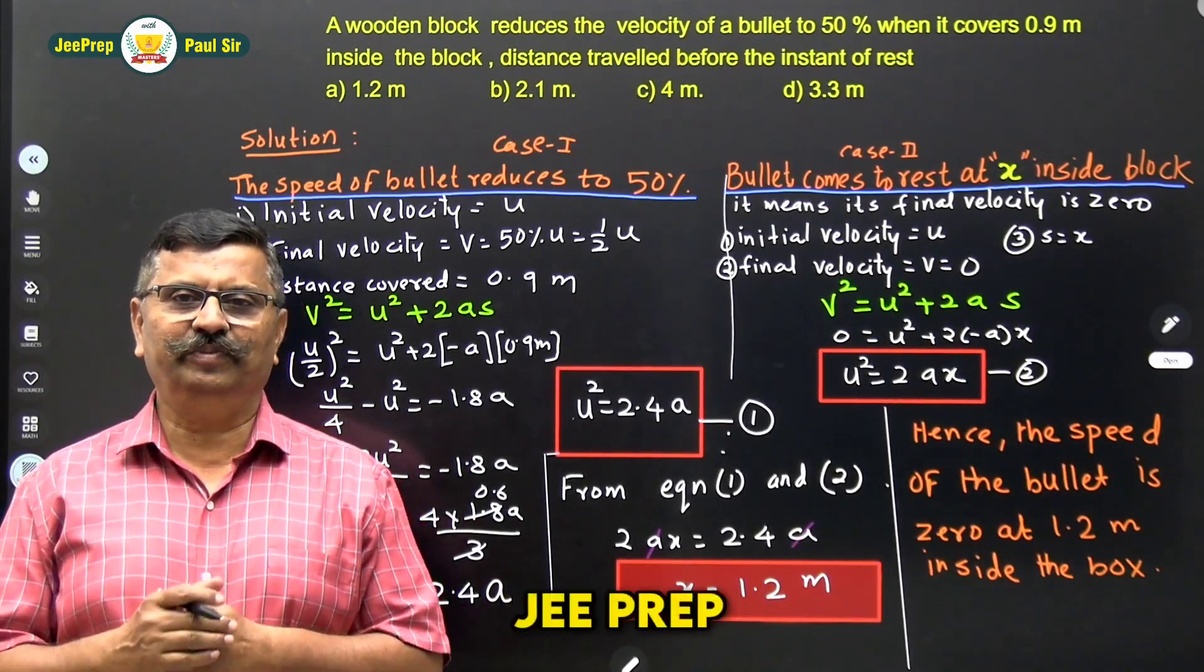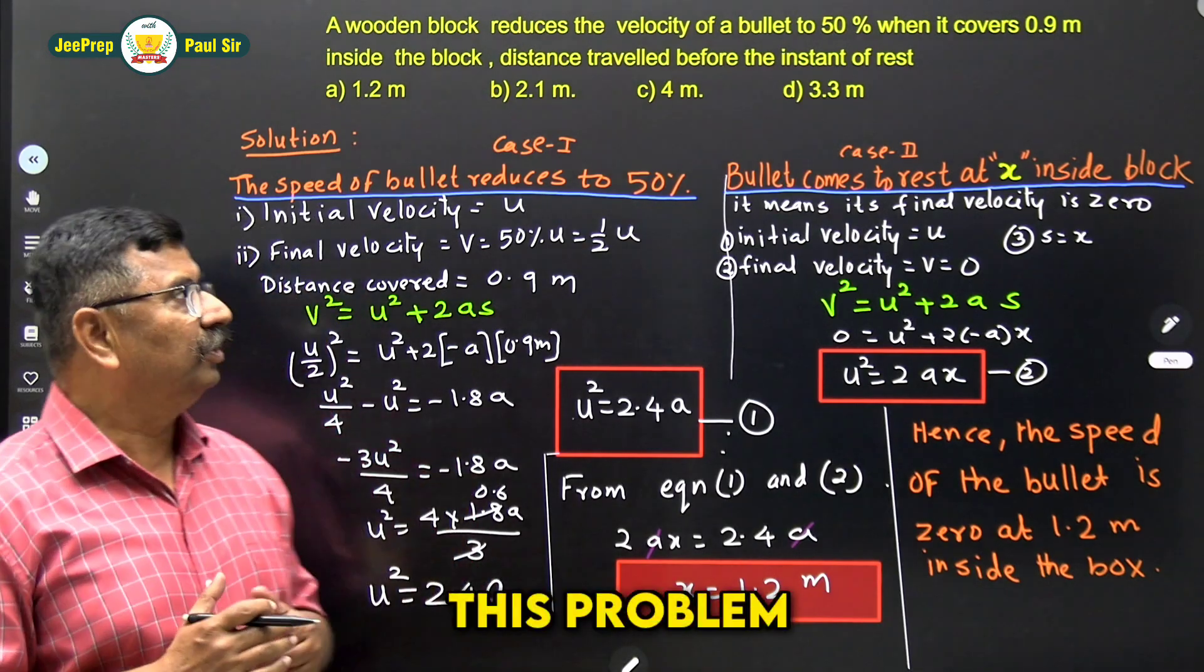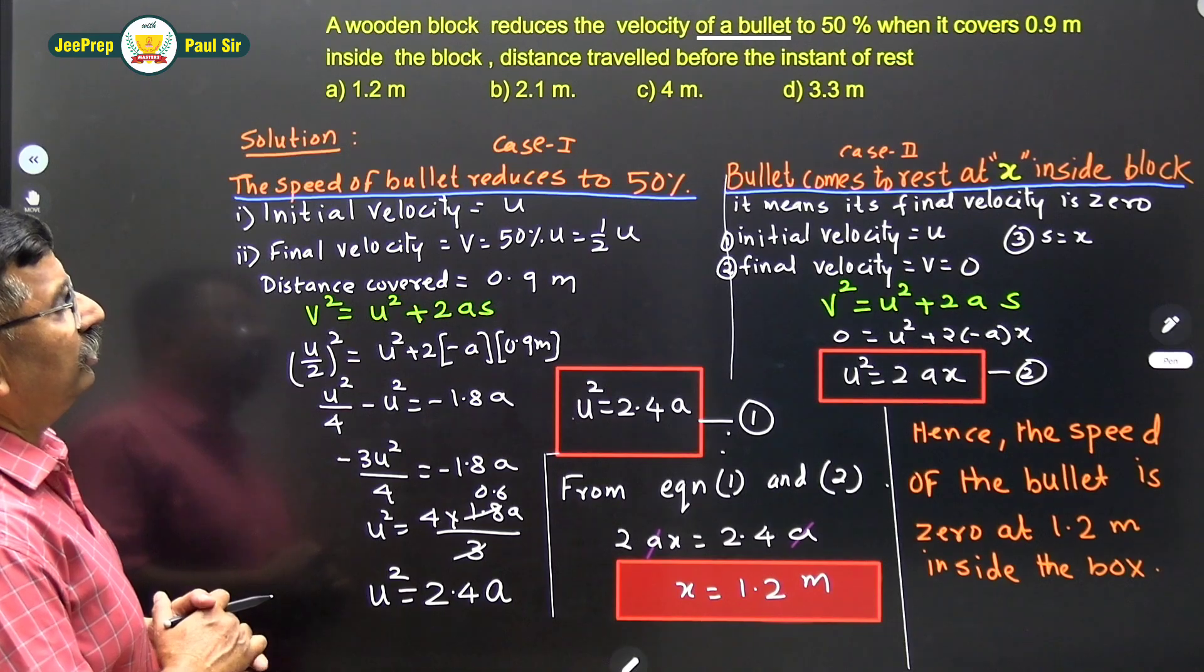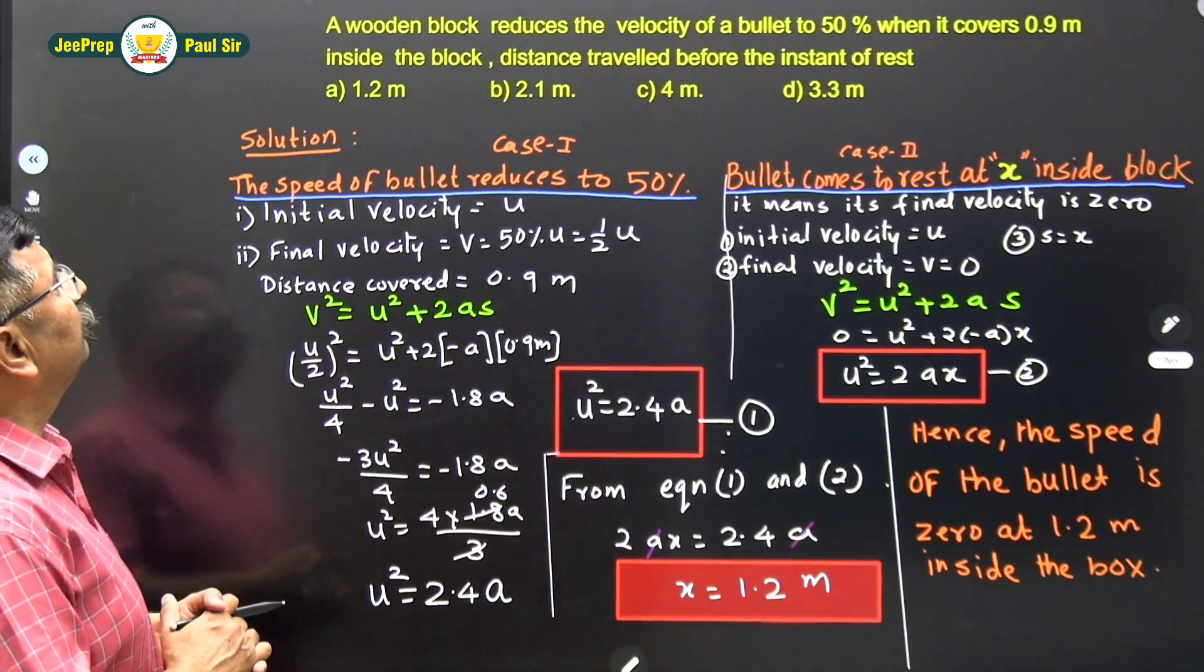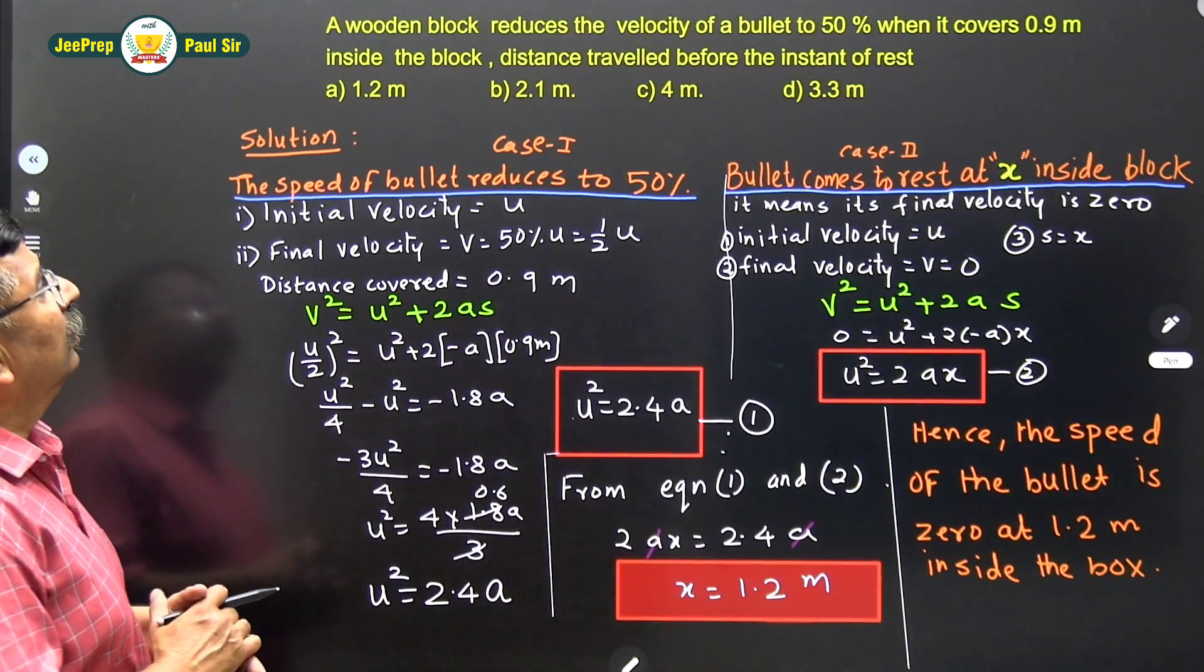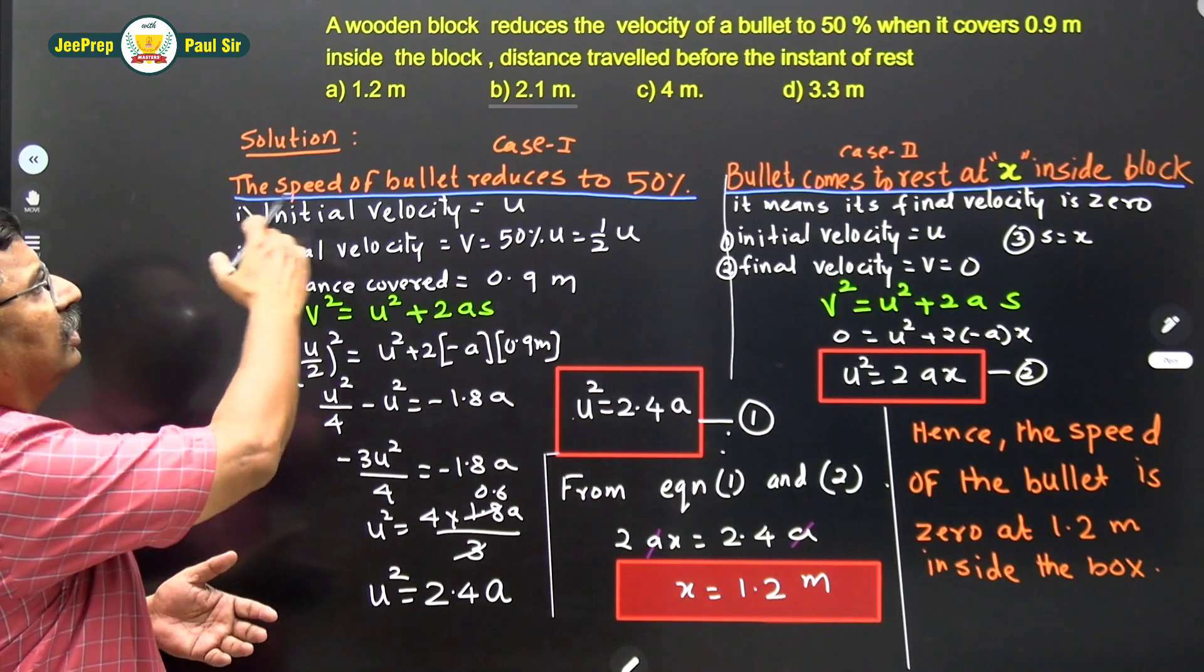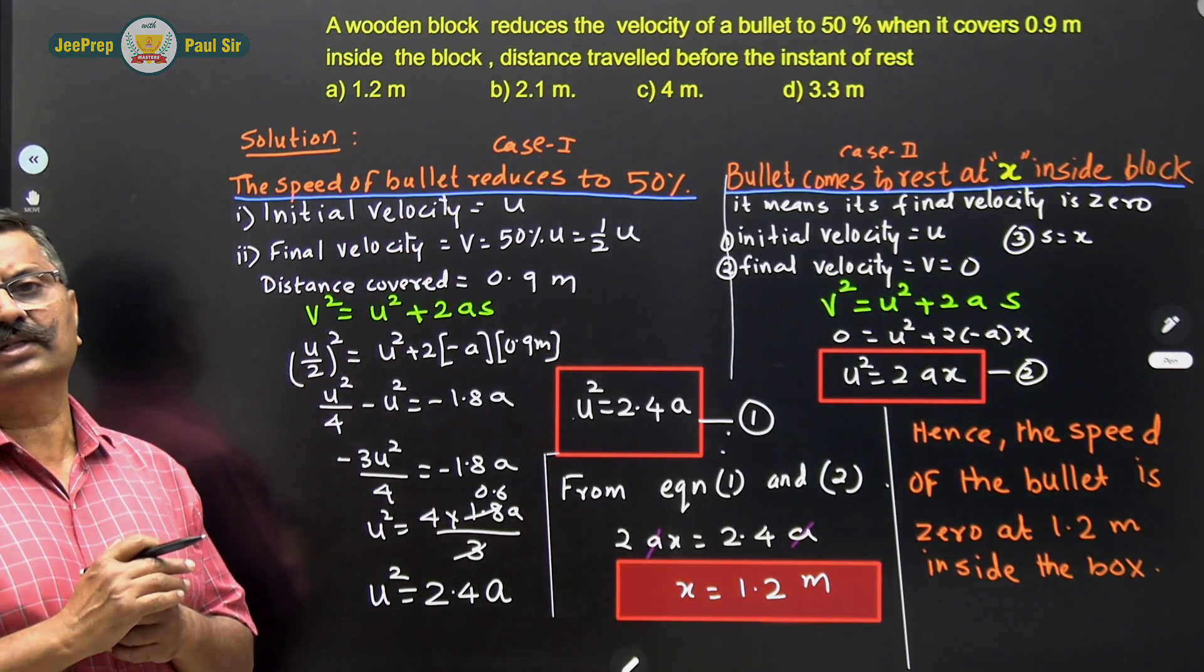Hello students, welcome to our J.E. Prep channel, hope all of you are doing well. Today we will solve this problem. A wooden block reduces the velocity of a bullet to 50% when it covers 0.9m inside the block. The distance traveled before the extent of rest and these are the 4 options given to us. Now let's understand what is this.